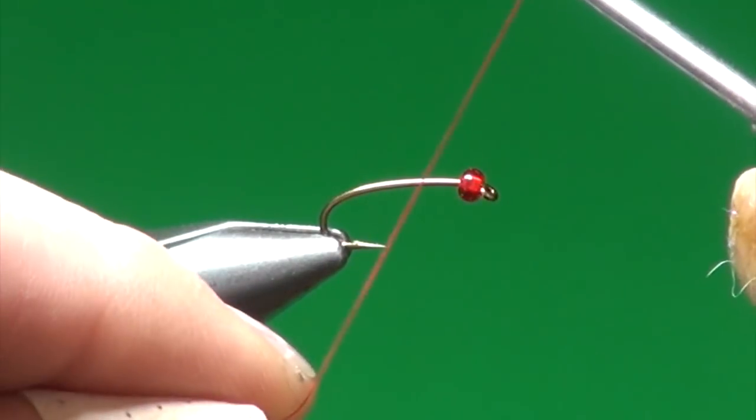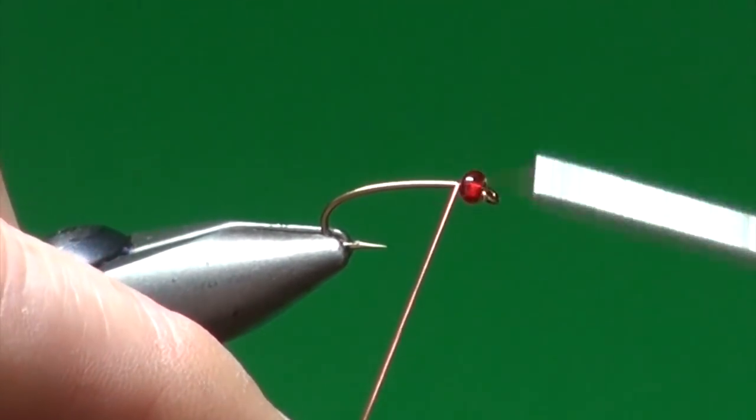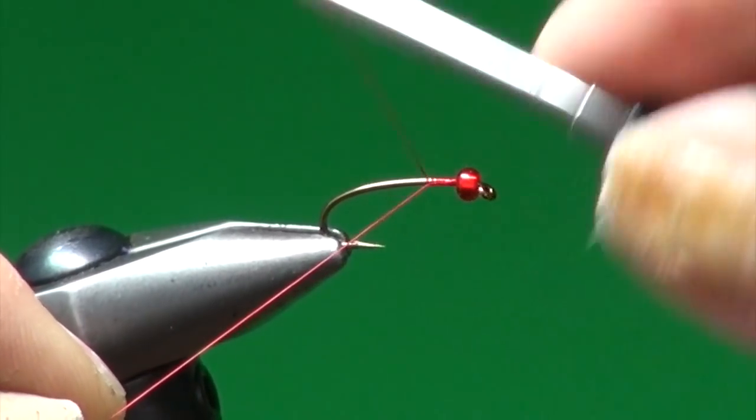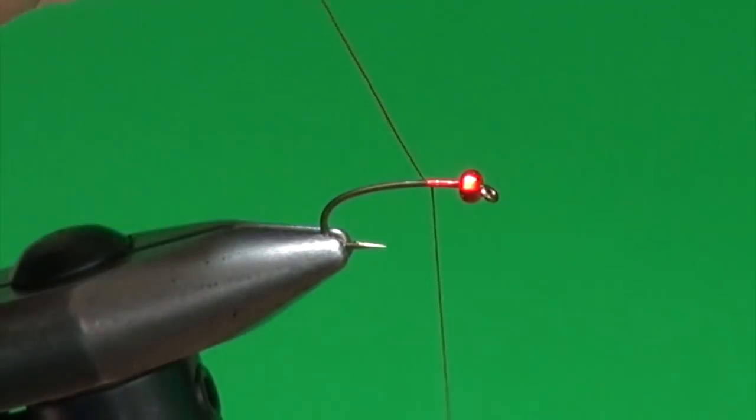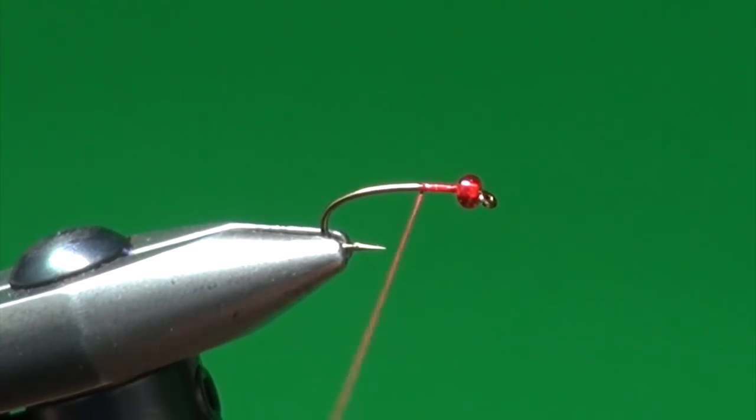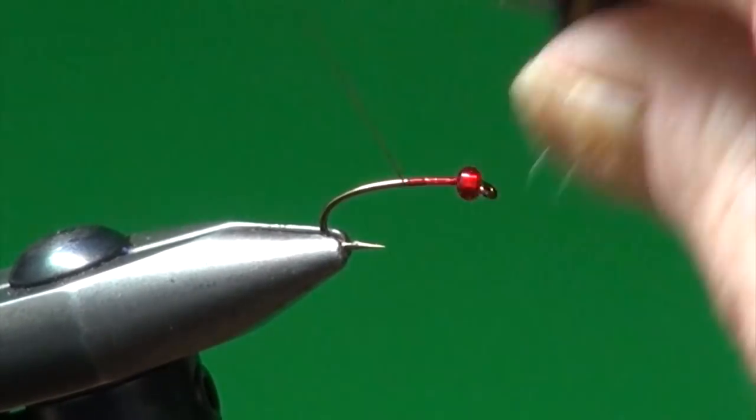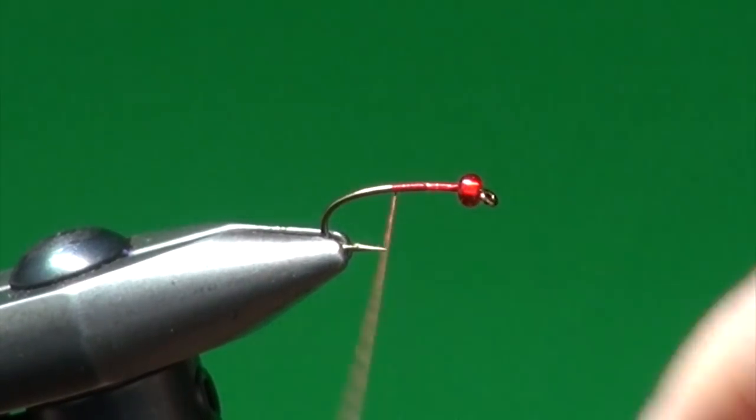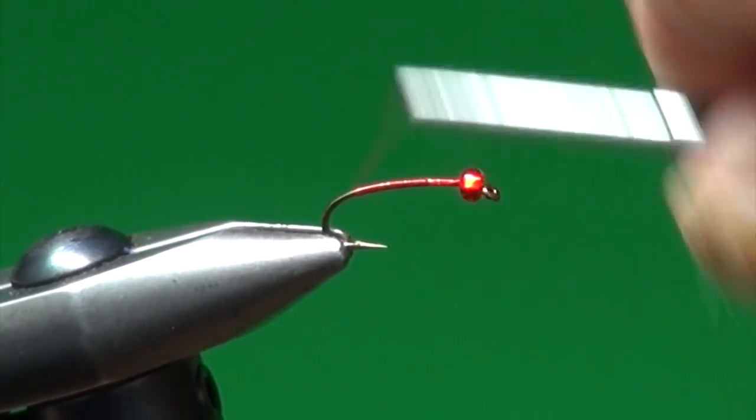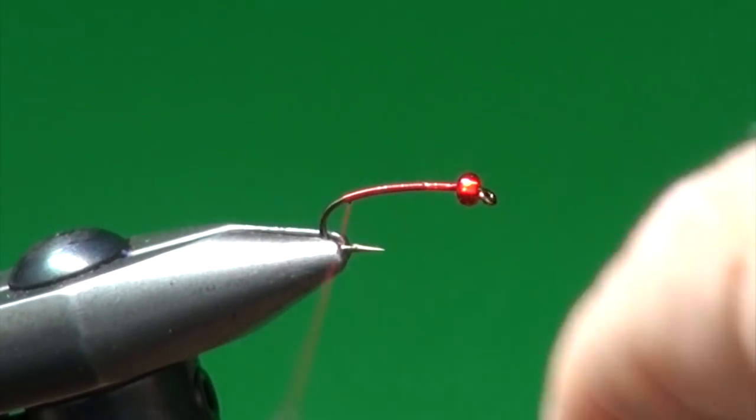So now I'm going to attach the tying thread, which is in this case red UTC 70. You could also use some of the MFC 6.0 or 8.0 thread. I'm going to get that started. Trim off the excess and continue down the shank, covering it with a nice thin layer of thread to provide traction for the rest of the materials we're going to tie on.